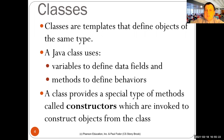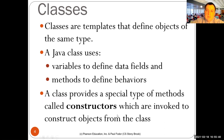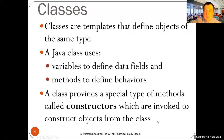A class provides a special type of method that in Java has no return type — what it returns is an object of that class, an instance of that class. These specific types of methods are called constructors. They have the same name as the class itself. There may be multiple constructors with different arguments — overloaded constructors — which are invoked to construct objects of that class.